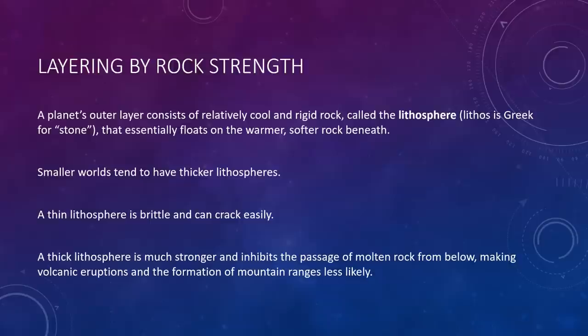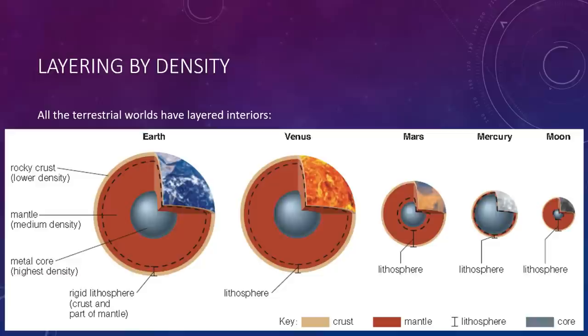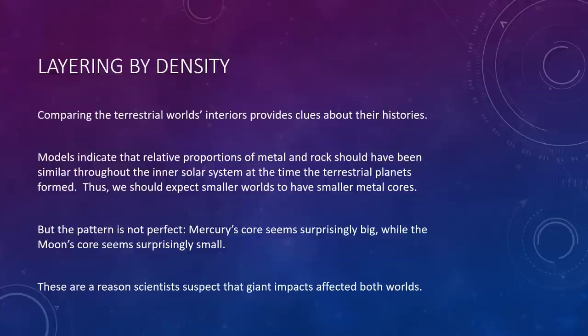A thin lithosphere is brittle and can break easily, while a thick lithosphere is much stronger and inhibits the passage of molten rock from below, making volcanic eruptions and the formation of mountain ranges less likely. The lithosphere is defined by the dashed line and the region from the surface to the end of that dashed line. So, again, for Earth and Venus, we have small lithospheres, but for the other planets and the Moon, the lithosphere extends almost all the way to the core. And we'll learn about how that happens later on.